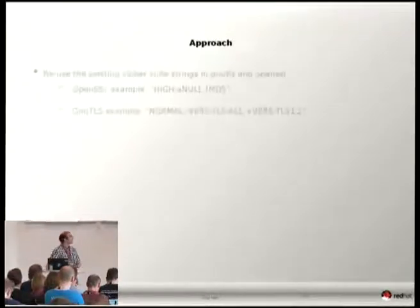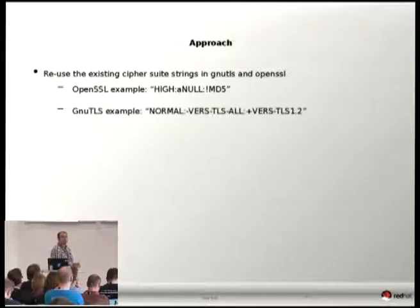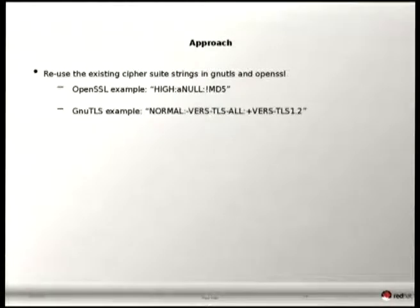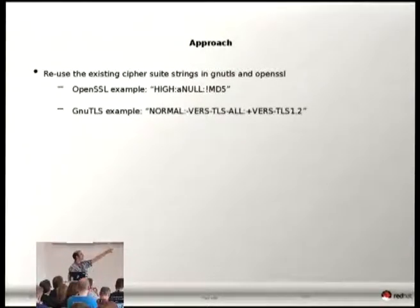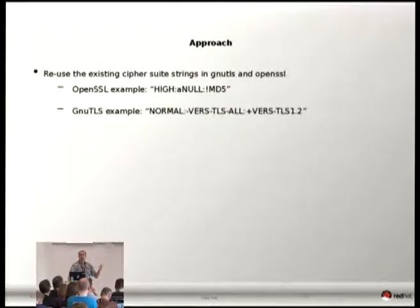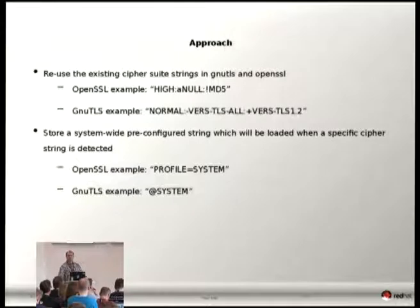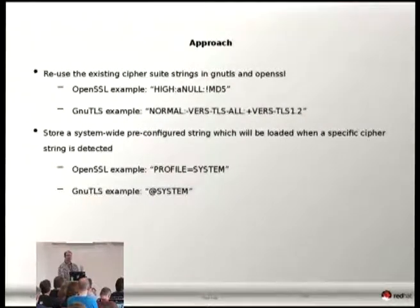What was our approach? If you have set up a server using either OpenSSL or GnuTLS, you have probably noticed that at some point you have to specify a cipher suite string. In OpenSSL it can be something to enable the high-level cipher suite except MD5. In GnuTLS it would be something to enable the normal cipher suite with only TLS 1.2. We figured that since we have several applications each having this kind of string in their configuration files, why not agree on a single string we set on every application, and when this string is encountered by OpenSSL or GnuTLS, it will just load the default system-wide policy.